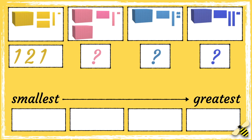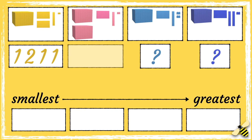Let's start with the yellow group. The yellow group has one thousand, it has two hundreds, it has one ten and it has one one. Now let's look at the pink group. The pink group has two thousands, it has one hundred, it has one ten and it has one one.